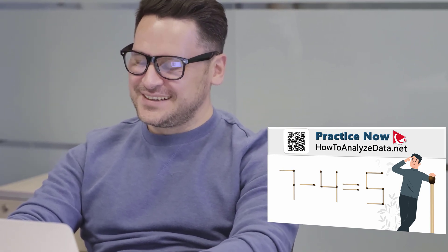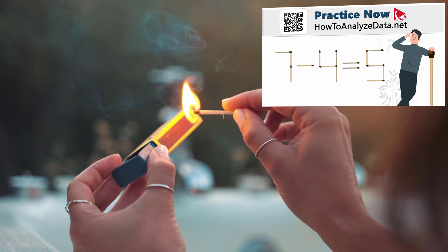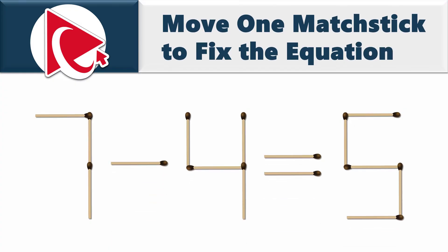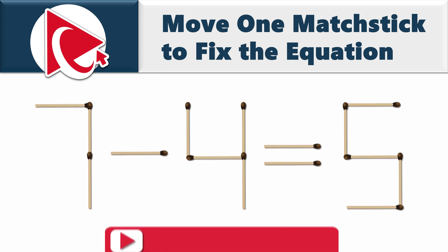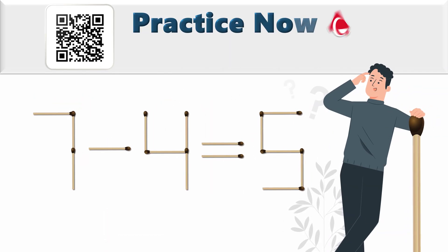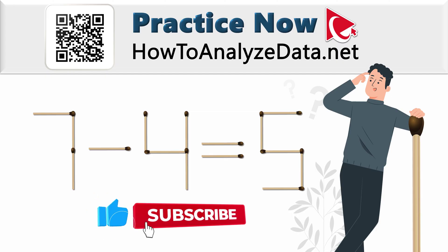This question is for you — attempting to solve it feels like trying to light a match in the wind. Sometimes you get a spark, but most of the time you end up with a metaphorically blown-out candle. You're presented with an incorrect mathematical equation built from matchsticks, and you need to move one matchstick to fix it. The equation as it stands is 7 minus 4 equals 5, which is not mathematically correct. Give it a shot on your own and drop your solution in the comments — problems like this can have multiple solutions, so your answer might be unique.